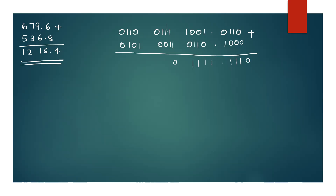1 plus 1 gives 0 into carry 1. 1 plus 1, 0 into 1. Then 1 plus 0 is 1. 0 plus 1 is 1. 1 plus 0 is 1. 1 plus 1 gives 0 with a carry. 1 plus 0 is 1.